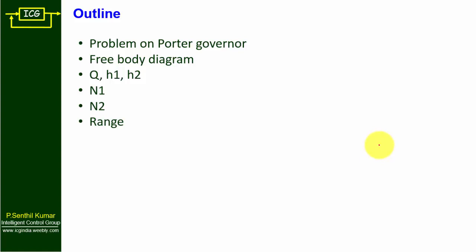This is subdivision 1. In subdivision 2, we need to find the minimum and maximum speeds of the governor considering the effect of friction. The frictional force acting on the governor will be given, so we find n1f and n2f, and then the range of speed considering the effect of friction.